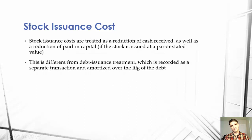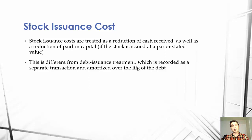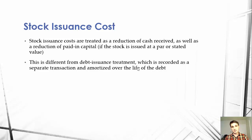Stock issuance costs are treated as a reduction of cash received as well as a reduction in the paid-in capital — that's if there's a PAR value. If there isn't a PAR value, it's a reduction in common stock. This question has a PAR value, so it's a reduction in paid-in capital. The difference from debt issuance treatment is that debt issuance costs are put into a separate account and then amortized over the life of the debt, while for stock we simply reduce the cash received.